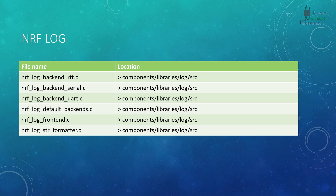For the logger, if you are using Segger's RTT library you need to include RTT files, and if you are using UART you need to include UART files. If you're unsure, include both and later switch between them by going into the sdk_config file to enable or disable the module. We will be using NRF Logger because it displays a lot of useful information, especially for debugging.